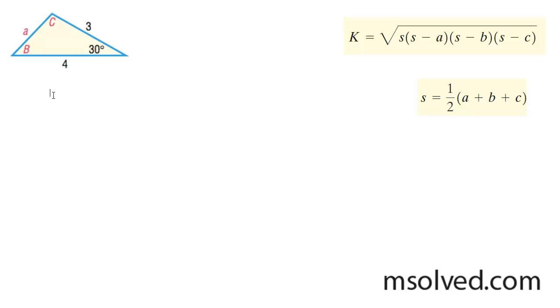So we're going to start off here. I'm just going to write a squared is equal to 3 squared plus 4 squared minus 2 times 3 times 4 times the cosine of 30 degrees.